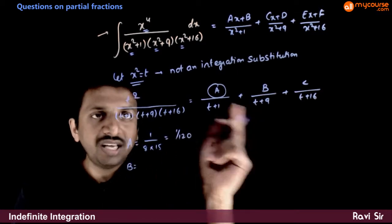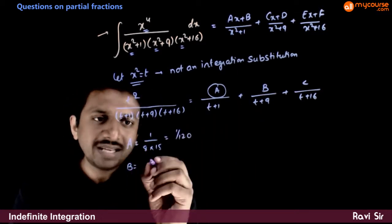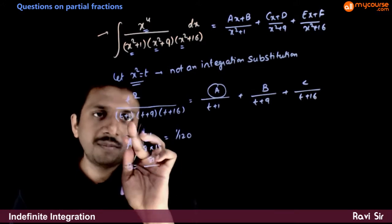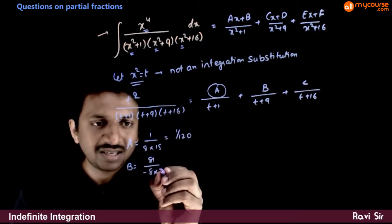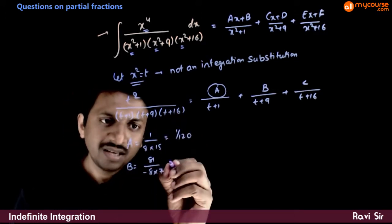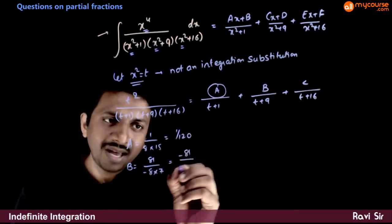b is equal to, put t equal to minus 9. So minus 9 whole square is 81 divided by minus 9 plus 1 is minus 8 times minus 9 plus 16 is 7. It is minus 81 by 56.